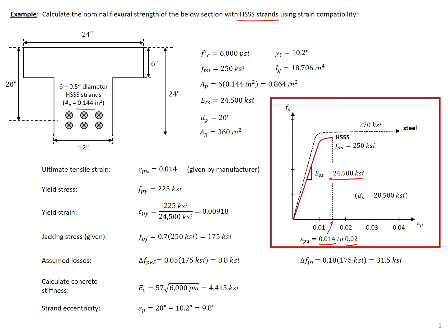We need our jacking stress, which will be given. We'll assume a jacking stress of 70% of our ultimate strength, so 175 ksi, which is less than the given yield stress for the strands. We'll assume losses of 0.05 times our jacking stress for elastic shortening loss, and 0.18 times our jacking stress for total loss. We can calculate our concrete stiffness using our conventional method to find a stiffness of 4,415. The strand eccentricity is the distance from our extreme compression fiber to the centroid of all pre-stressing strands minus yt, giving a strand eccentricity of 9.8 inches.